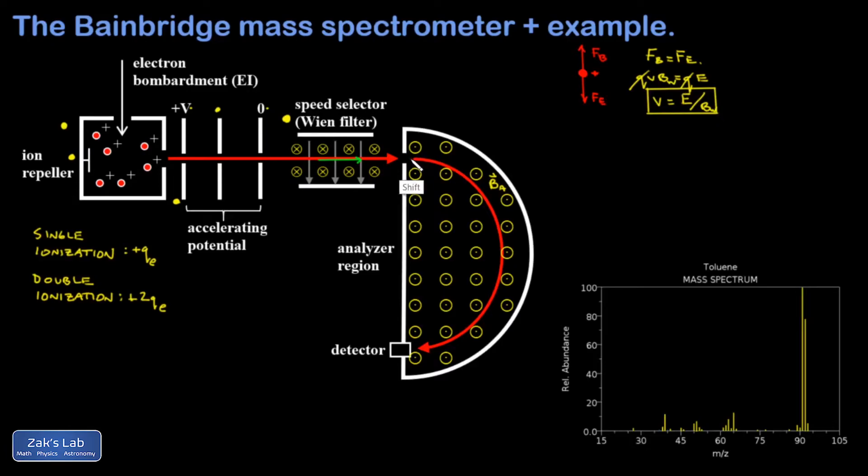As the beam first enters the analyzer region, it's moving perfectly to the right. Using the right-hand rule once again, we find that the magnetic force is downward.